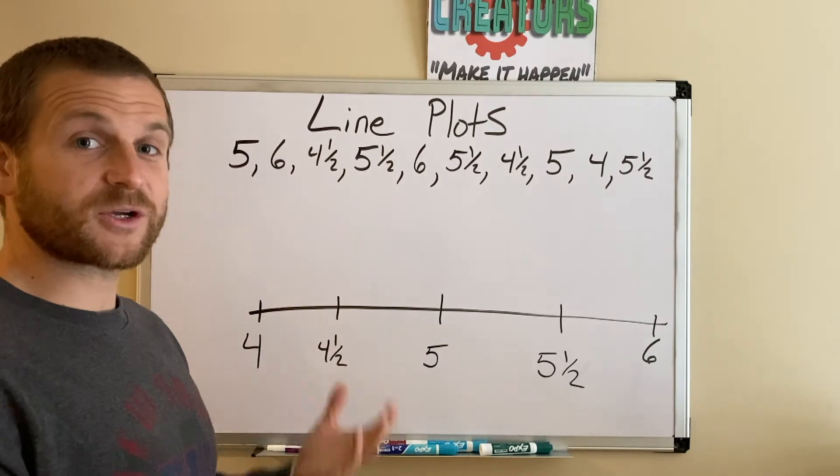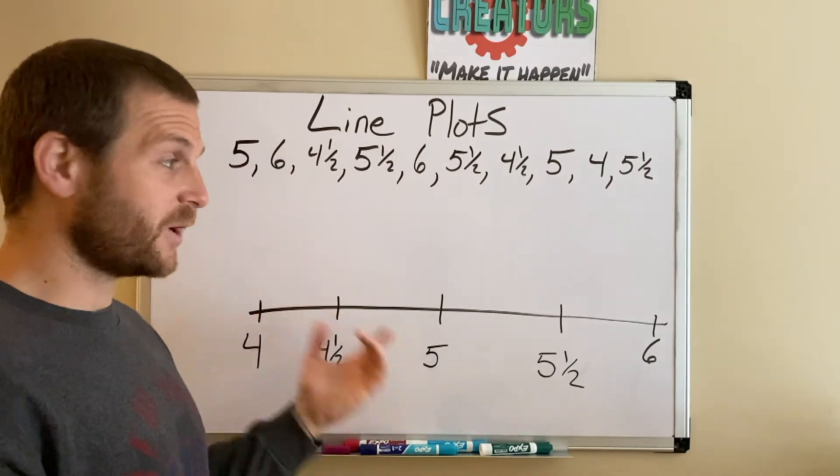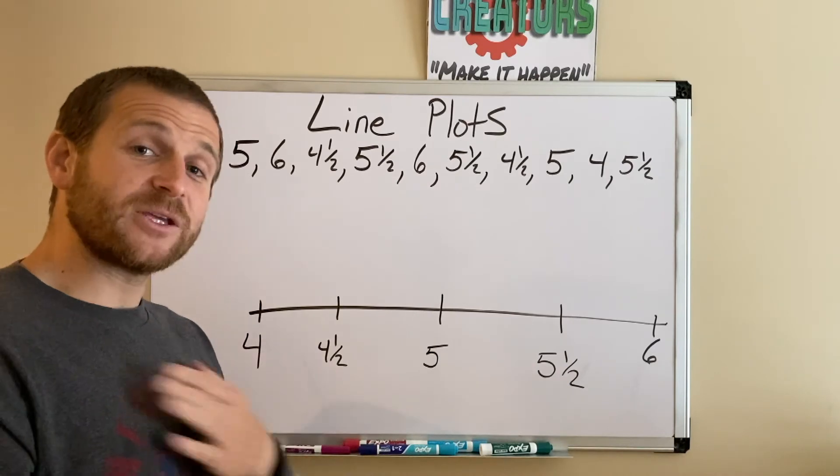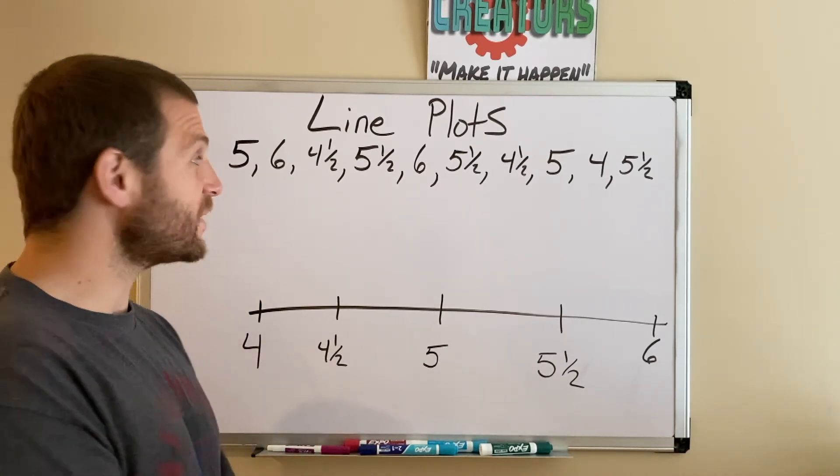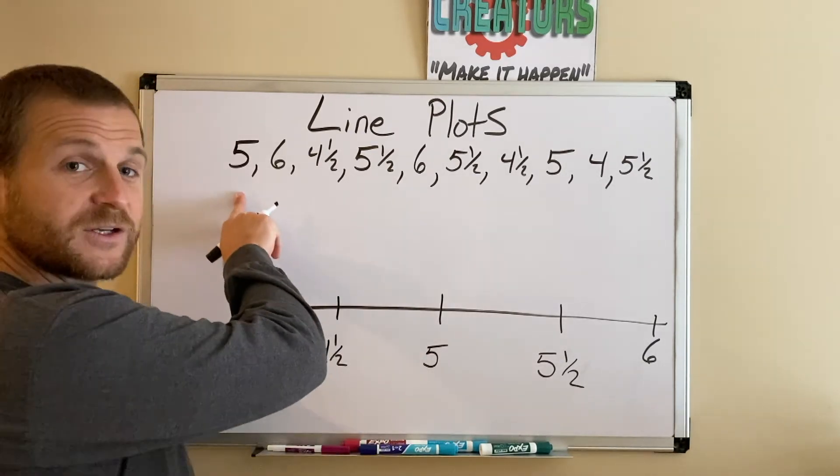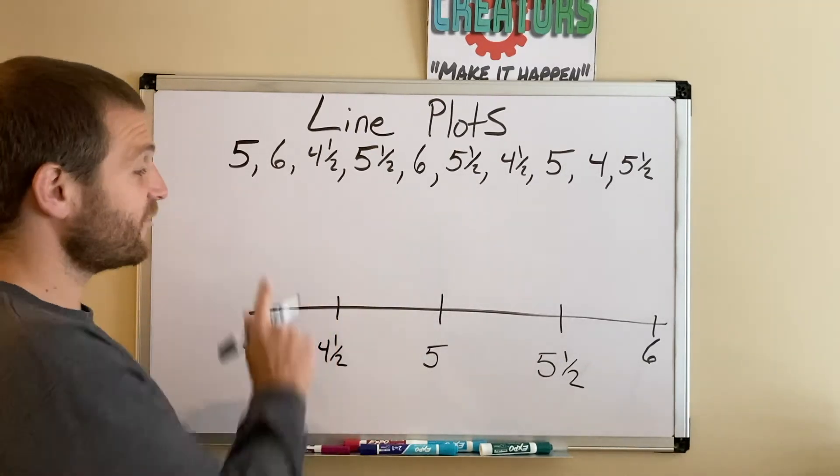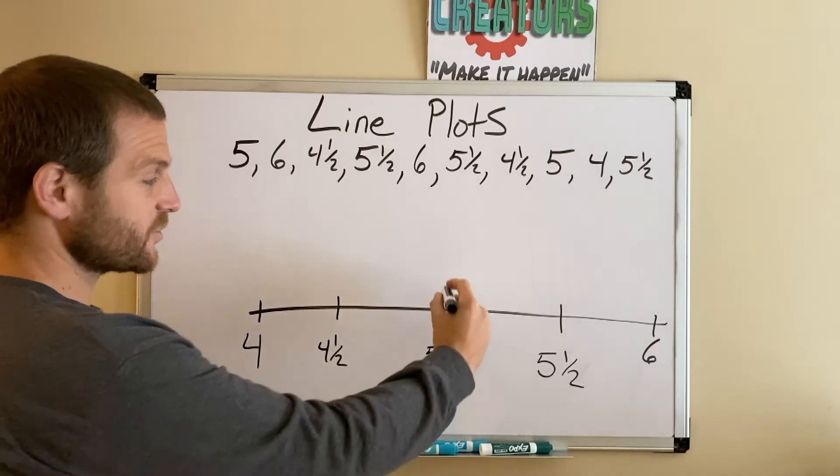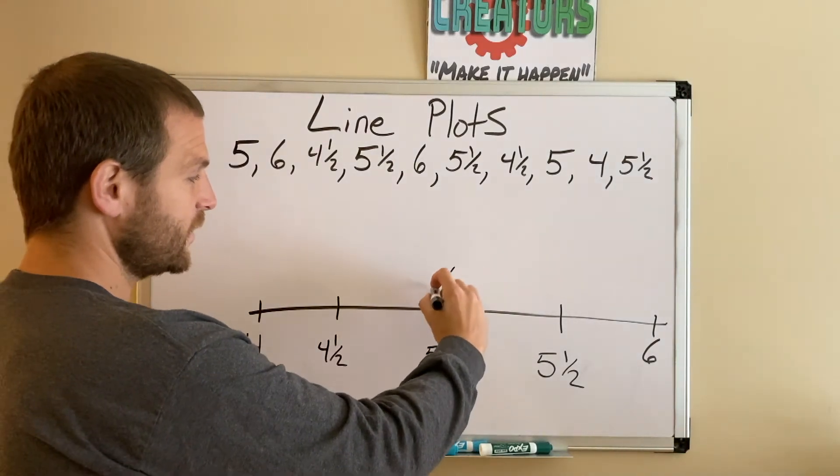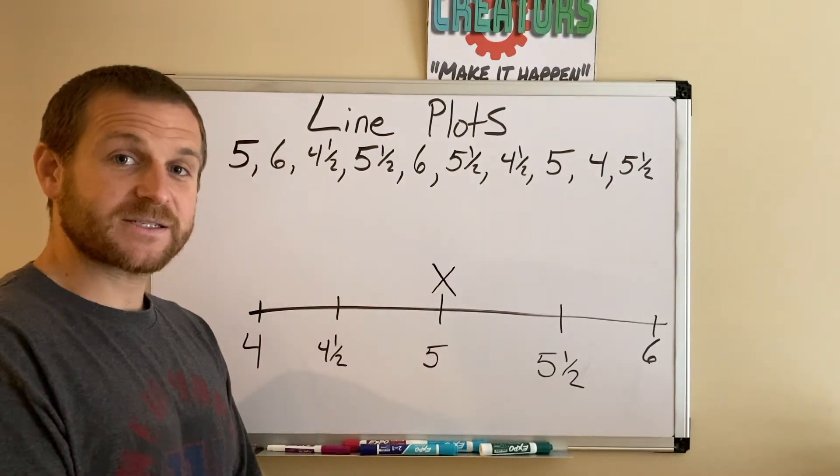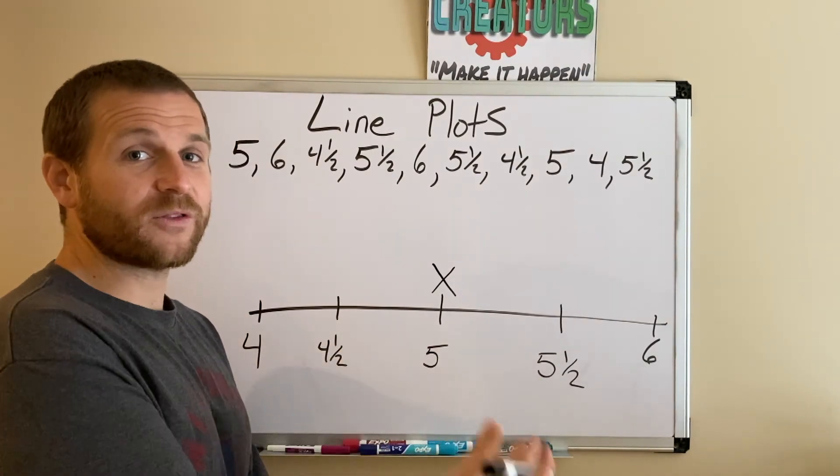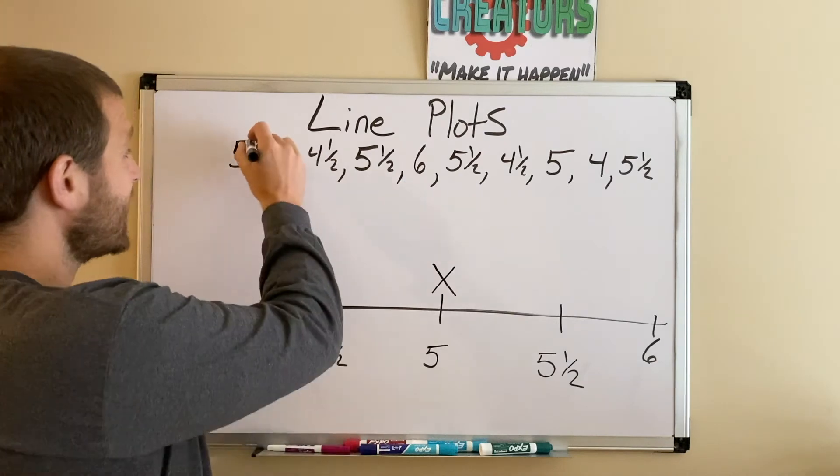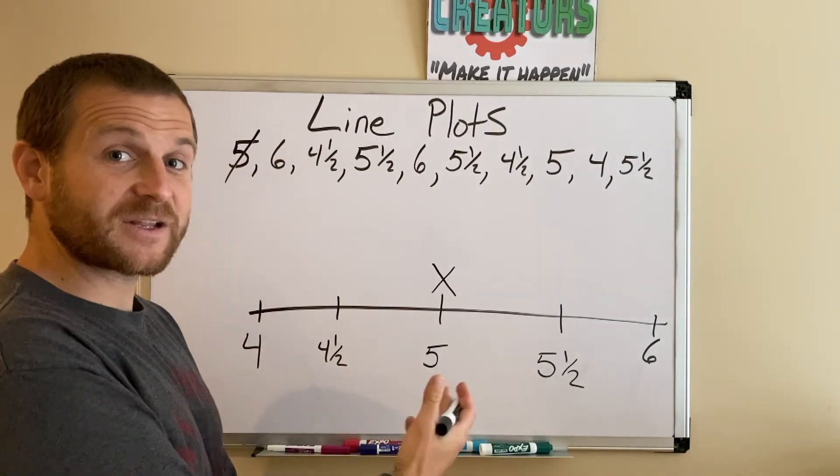What I'm going to do is go through each data point one by one and graph them on my chart. I'm going to use simple X's, which is most commonly used when making a line plot. I'm going to start at 5, so one person said the alphabet and it took them 5 seconds. I'm just going to go right above my 5 right here and put in an X. You want to try and make your X's a standard size. Then I can cross off that because I've graphed that data point.